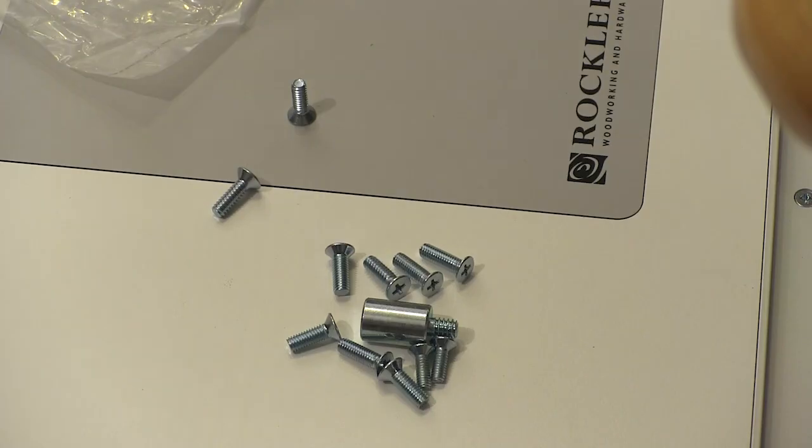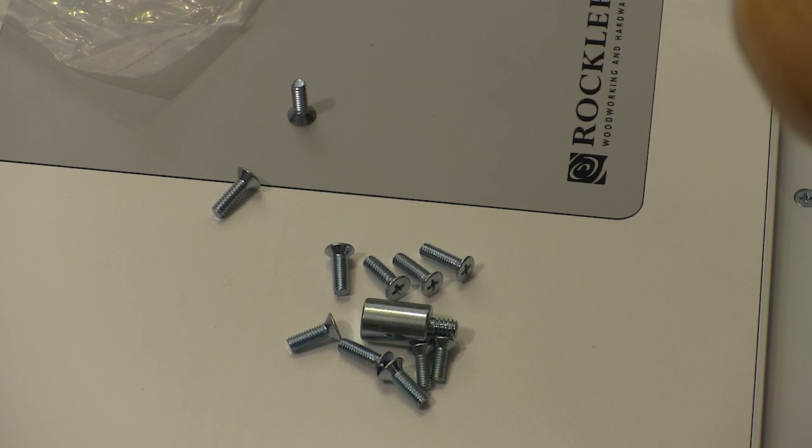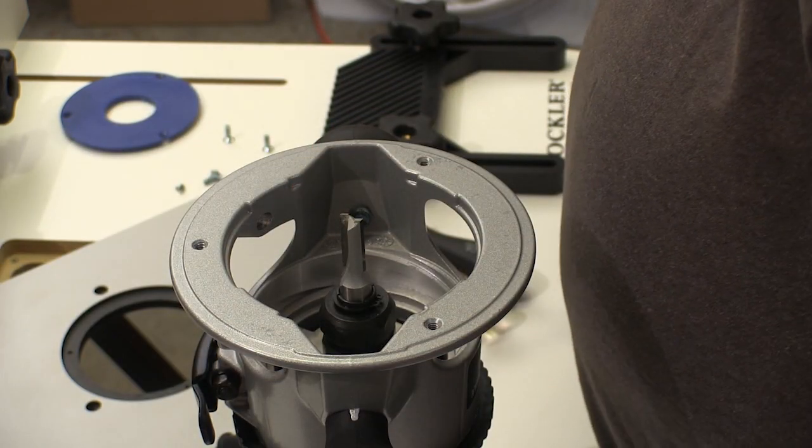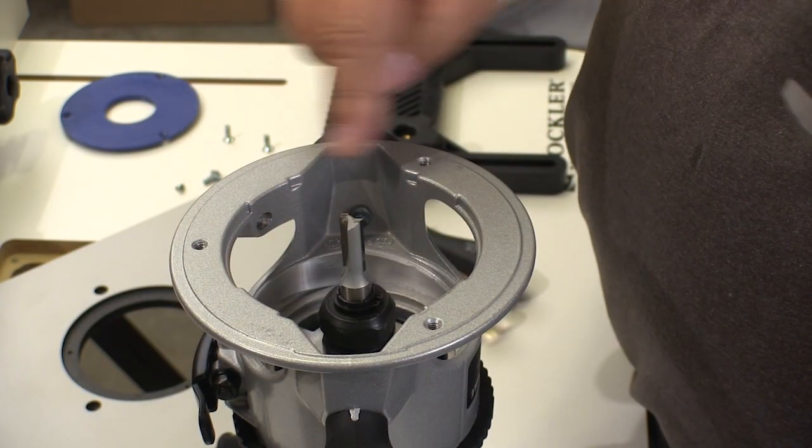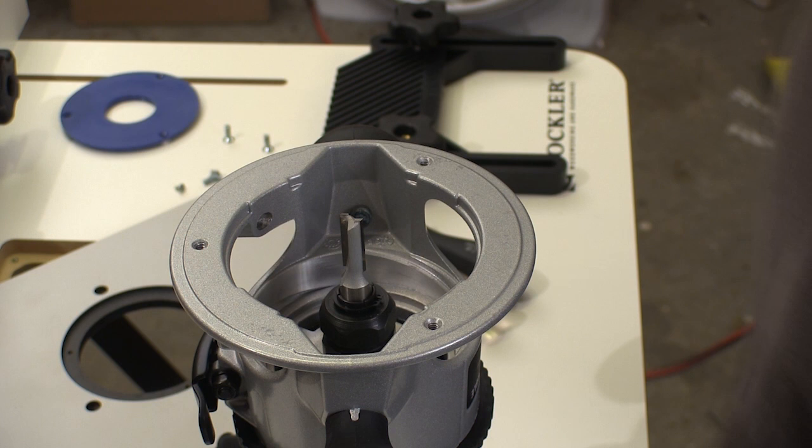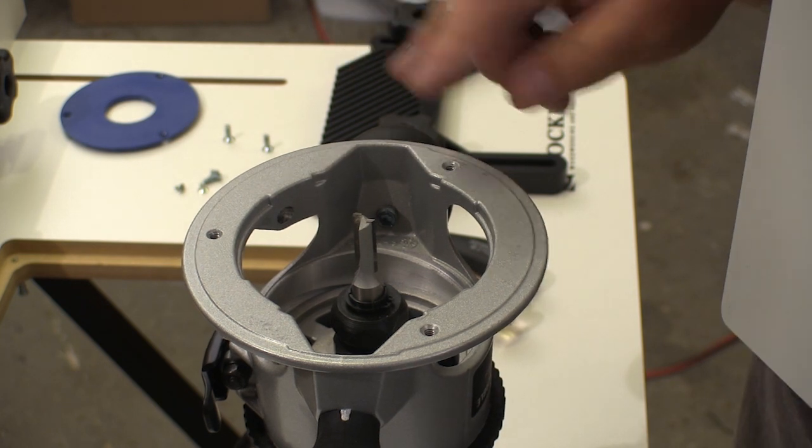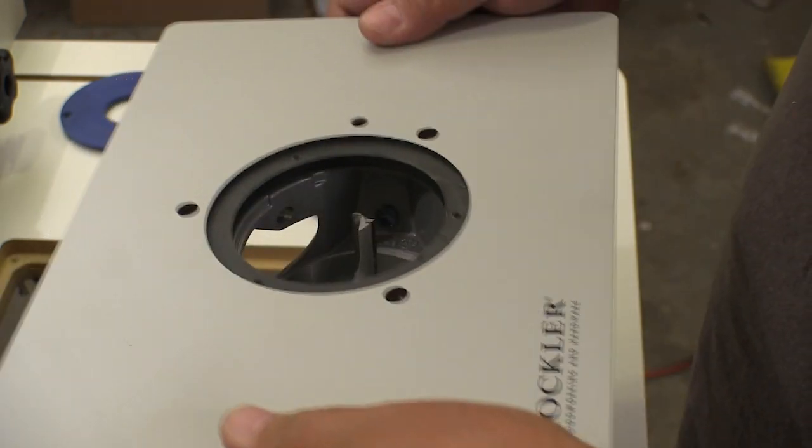To attach the router base to the plate, Rockler supplies this selection of screws that fit all of the Group A routers. First we have to remove the base plate from the router. Some routers will have four screws holding the base plate on, but will have this three bolt pattern underneath. Some routers will fit the opening better when they're aligned a certain way to this pattern, so check that before you tighten everything up.